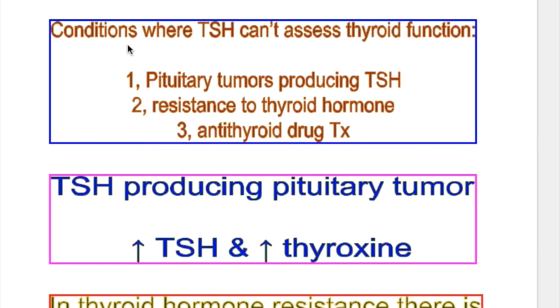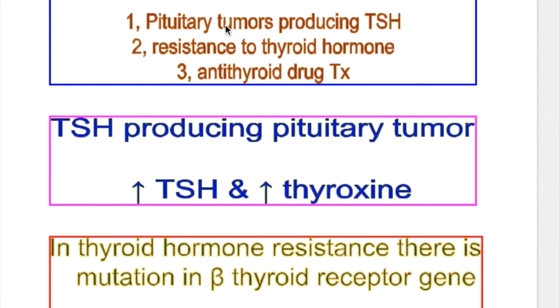Three conditions where TSH cannot assess thyroid function are: number one, pituitary tumor producing TSH; number two, if there is resistance to thyroid hormone; and number three, treatment with antithyroid drugs.